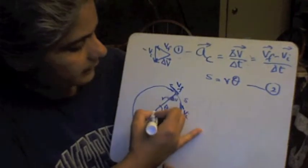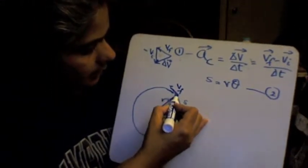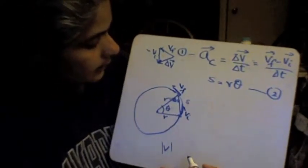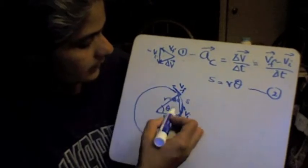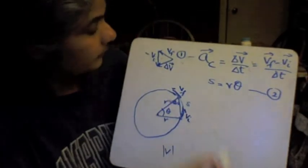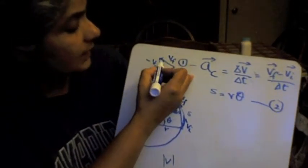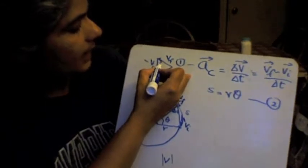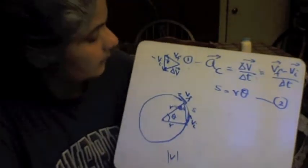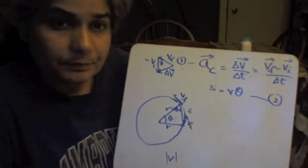If you consider this triangle here, and I'm going to replace this arc here by a straight line, since theta is small, then you see that we have two equal sides, which are both R, and an included angle theta. And here we have two equal sides, which are both V, because VF and VI are both V in magnitude, and the same included angle theta. That means these two are similar triangles.